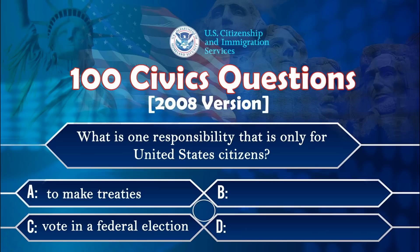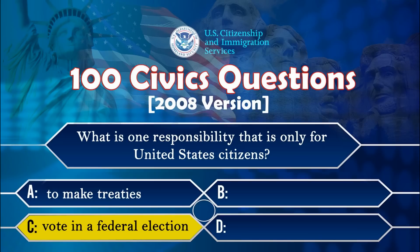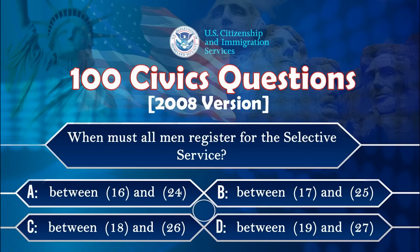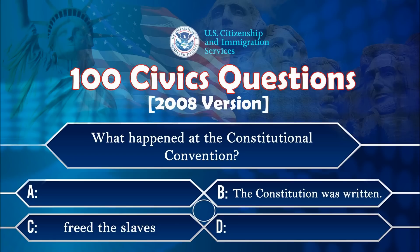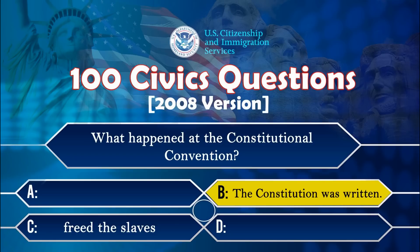What is one responsibility that is only for United States citizens? Vote in a federal election. When must all men register for the Selective Service? Between 18 and 26. What happened at the Constitutional Convention? The Constitution was written.